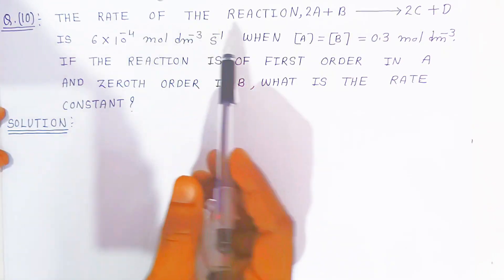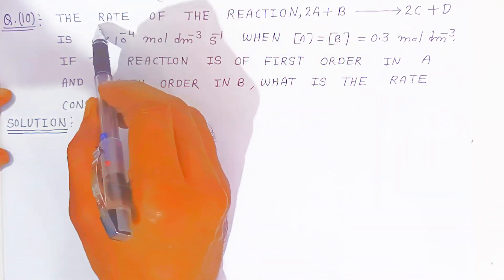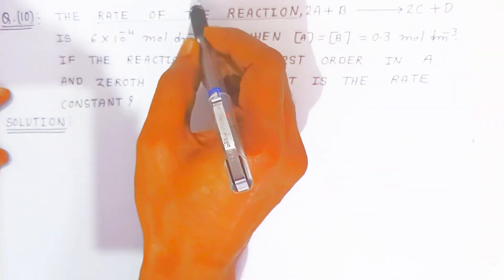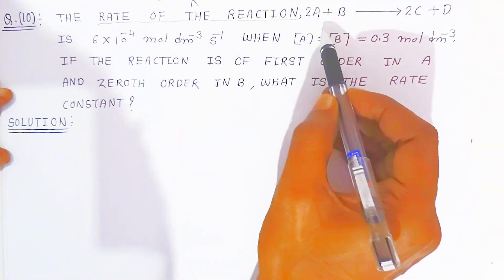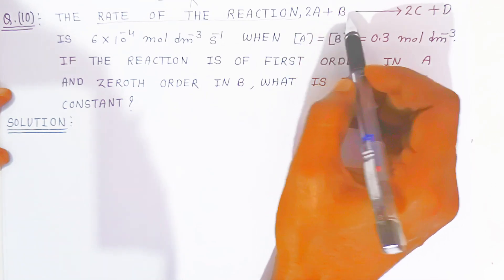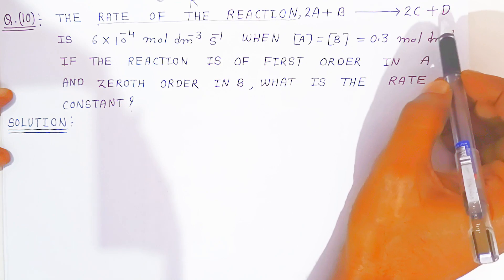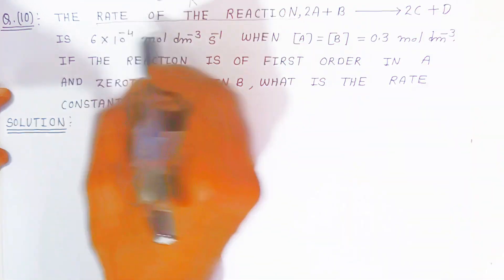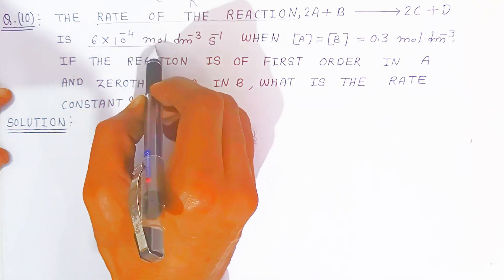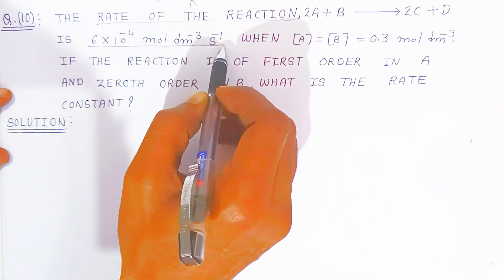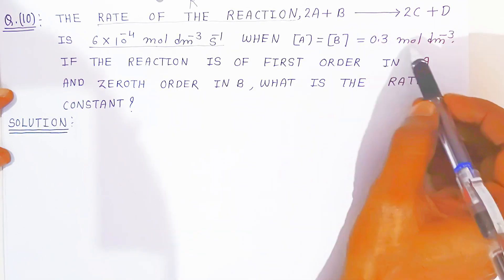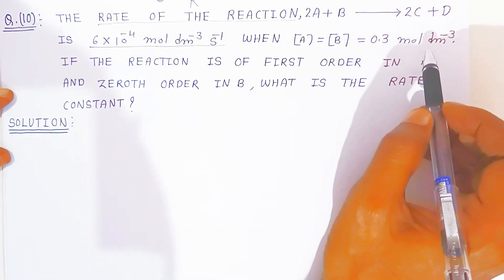In question 10, you have the rate of the reaction. We are going to show the rate of the reaction with capital R. The reaction is: 2A + B gives 2C + D. The rate of this reaction is given as 6×10⁻⁴ mol per dm³ per second. The concentration of A and B is given as 0.3 mol per dm³ — both concentrations are the same.